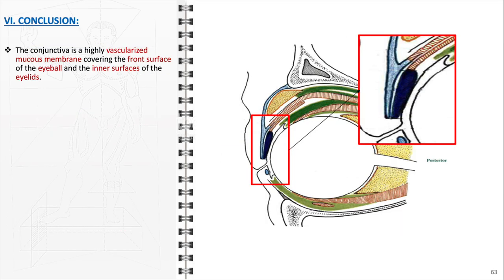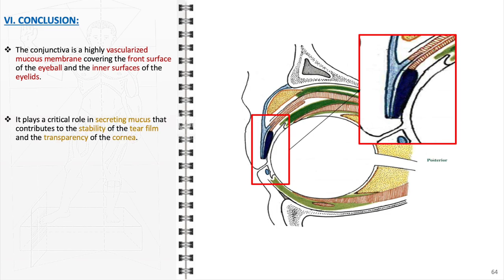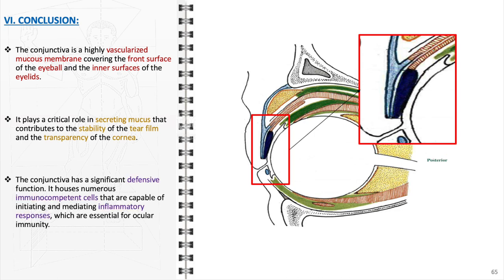In summary, the conjunctiva is a mucous membrane richly supplied with blood vessels, covering the front of the eyeball and lining the inner surfaces of the eyelids. It plays a pivotal role in secreting mucus to ensure the stability of the tear film and maintain corneal transparency. Additionally, the conjunctiva has a significant defensive function, housing numerous immunocompetent cells that are capable of initiating and mediating inflammatory responses, which are essential for ocular immunity.